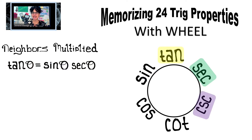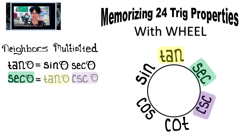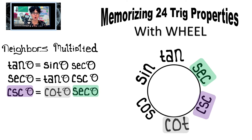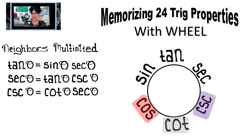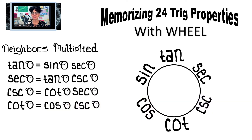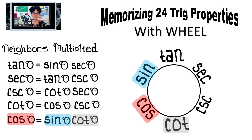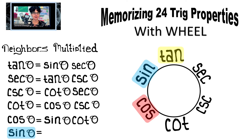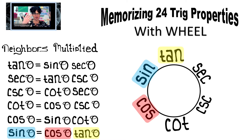Secant's next-door neighbors would be tangent and cosecant, so secant of theta equals tan of theta times cosecant of theta. Cosecant's next-door neighbors are secant and cotangent, so cosecant equals cotangent times secant. Then cotangent's next-door neighbors are cosine and cosecant, so cotangent equals cosine times cosecant. Cosine's next-door neighbors are sine and cotangent, so cosine equals sine times cotangent. Lastly, sine's next-door neighbors are tangent and cosine, so sine equals cosine times tangent. Here we have six trig properties so far — you take your trig function, go to their neighbors, and multiply them together.